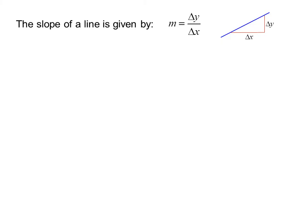The slope of a line is given by m equals delta y over delta x, rise over run.